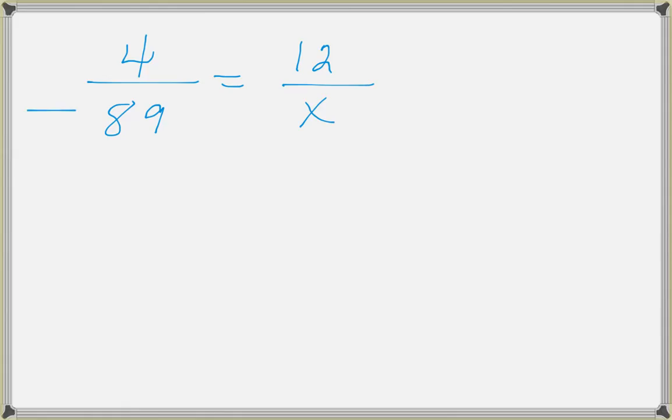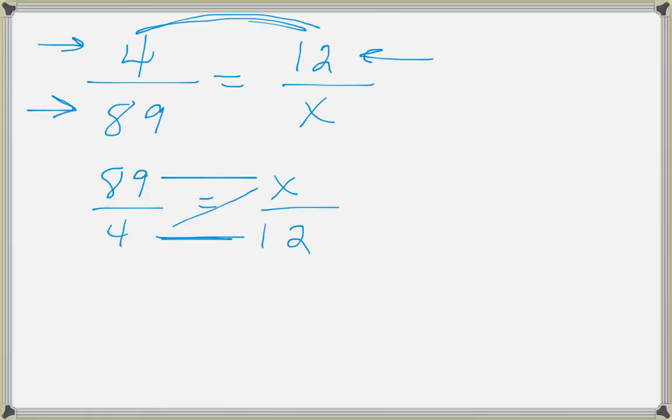Now we've already said that this represents cents and this represents cans. Notice they're both on the top. I could have written it differently if I'd wanted to, as long as I'm consistent. So when we do our math, we do 4x equals 89 times 12. You're probably going to want to take your calculator and do your math there. So 89 times 12 comes out to 1068. Divide both sides by my 4. So 1068 divided by 4 comes out to 267.